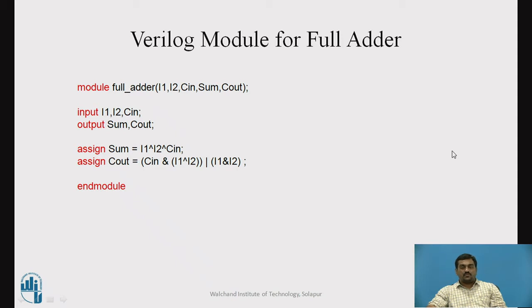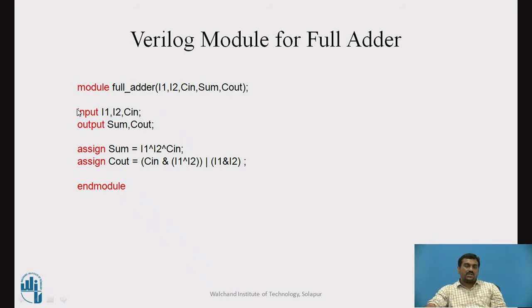This is the module definition for the full adder circuit. The module definition starts with the module keyword followed by the name of the module, which is full_adder, and inside the brackets you provide the list of inputs and outputs: I1, I2, C_in, sum, and C_out. In the next lines we define the inputs and outputs explicitly: input I1, I2, C_in and output sum, C_out with a semicolon.